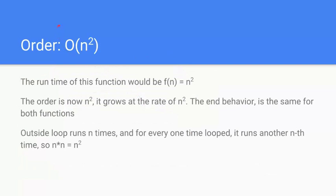The order of this function would be O of n squared. The outside loop runs n times and for every one time loop, it runs another nth time. So it's going to run a total of n squared times. The end behavior of this function is equal to our n squared behavior. So the run time and the order are the same. However, again, they are not the same thing.